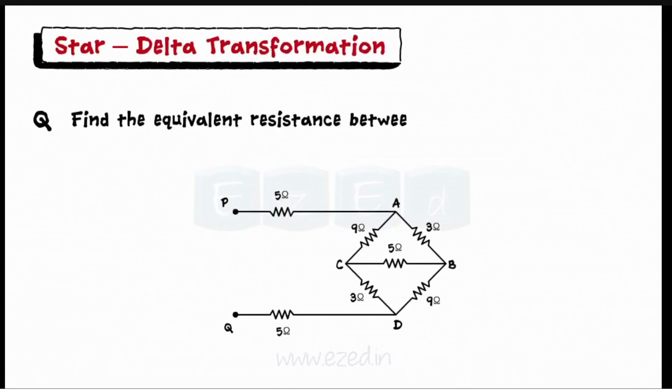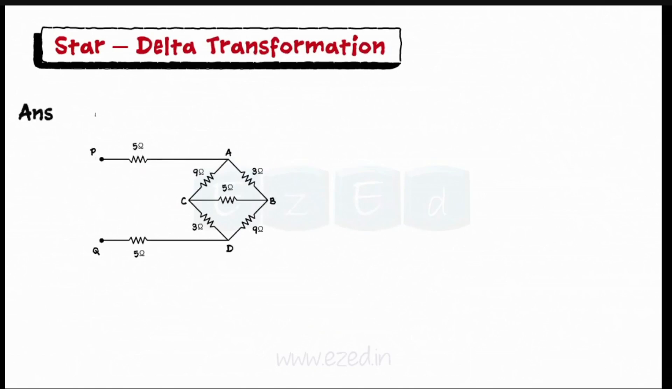Let's illustrate our concept with the help of an example. Find the equivalent resistance between points P and Q in the network as shown in the figure.